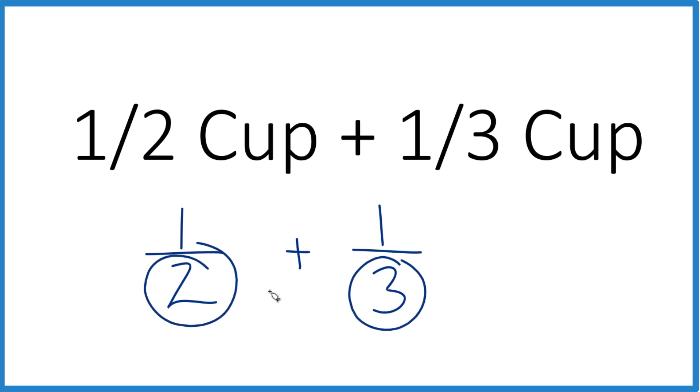With fractions, if these are the same, we'll just keep them the same. And then we add the numerators. So let's try that. Let's take and multiply 2 times 3, because that would give us 6.